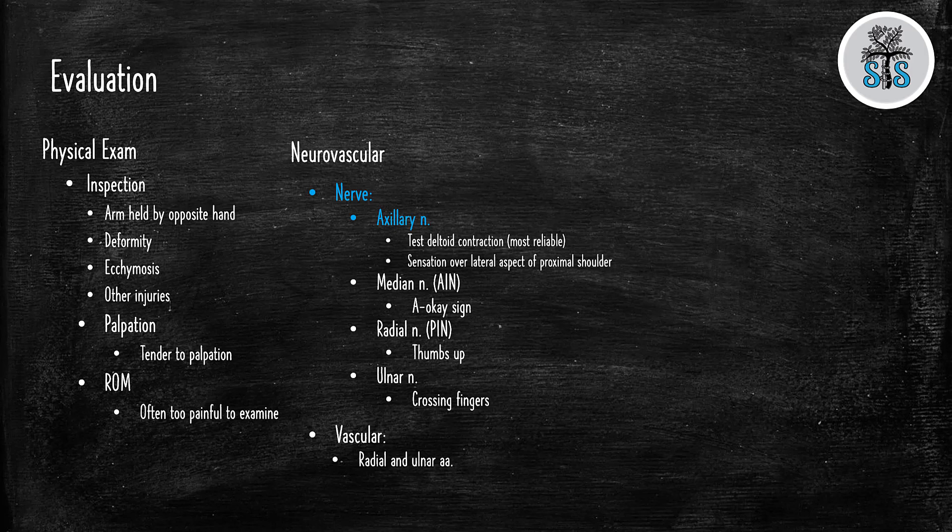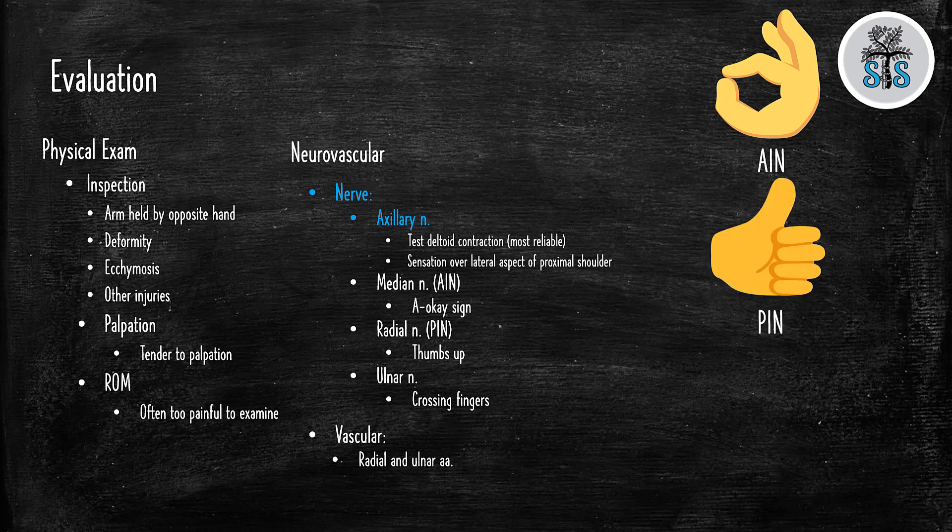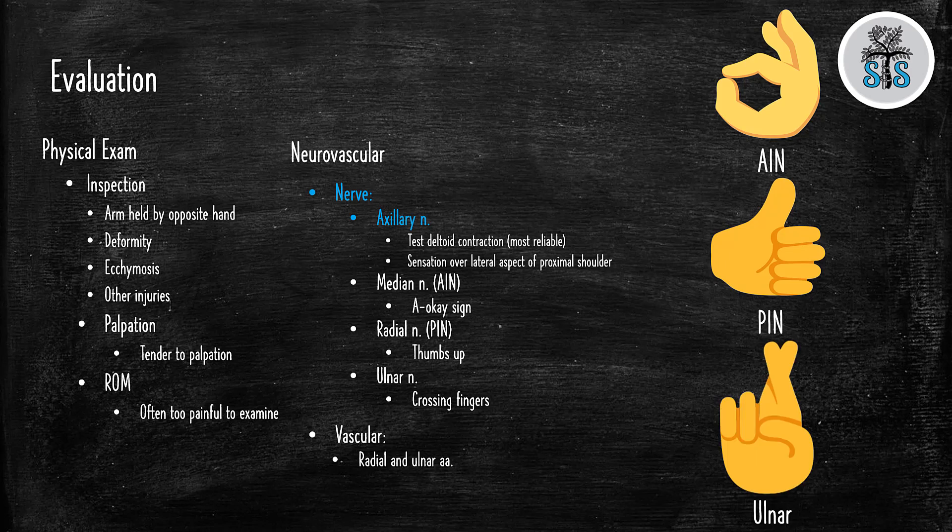You also want to palpate. They're going to be very tender to palpation, but just make sure there's also not an associated clavicle or scapular fracture. They're pretty much going to be too painful to move for a range of motion, so you're not going to be able to get a good assessment from that. Now, getting a good neurovascular exam is also very important. Testing for the axillary nerve, the most sensitive exam is going to be to see if they can contract their muscle. They're probably going to be too painful to move it, but even if you can feel a twitch in the deltoid, that's better than nothing. But you also want to test their sensation over the lateral aspect of their deltoid to see if it's intact because that's the most common nerve that's going to be injured in these types of fractures. You also want to test the other nerves, the upper extremity. You test the median nerve through the AIN by doing the A-OK sign, the radial nerve through the PIN doing a thumbs up, and the ulnar nerve by doing crossing fingers. This is called testing for the cardinal hand movements. And lastly, check their radial and ulnar arteries.